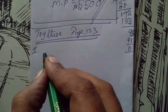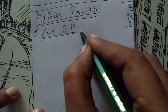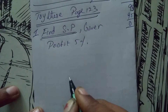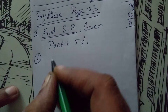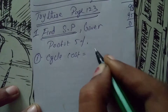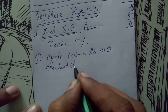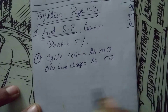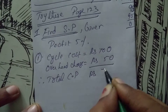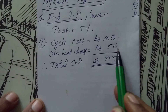What we have to find: selling price. Given profit 5%. In the first subdivision, they have given the cost of the cycle. Cycle cost rupees 700 and overhead charge rupees 50. Therefore what is our total cost price? Total cost price is rupees 750. First we add the original cost with overhead charge to find total cost.